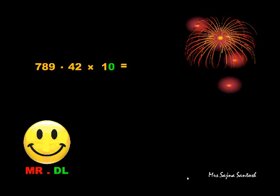Seven hundred and eighty-nine point four two, multiplied by ten. Since it is multiplication, I will be jumping to the right. And since there is only one zero in ten, I'll be jumping only once. Let's watch. And the answer is seven thousand eight hundred and ninety-four point two.